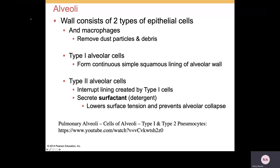The alveoli themselves consist of two types of epithelial cells, as well as macrophages, which are important for breaking down debris, dust particles, and whatever else reaches the level of the alveoli.